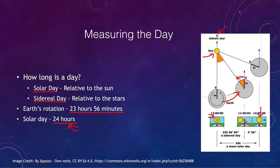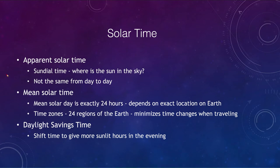Astronomers use the sidereal day — how long it takes the stars to return to position — but for ordinary civil time we use the solar day. However, even the solar day is not uniform. We have apparent solar time, which is what you would get from a sundial. The position of the sun in the sky changes from day to day, so apparent solar time can vary by as much as half an hour over the course of the year.